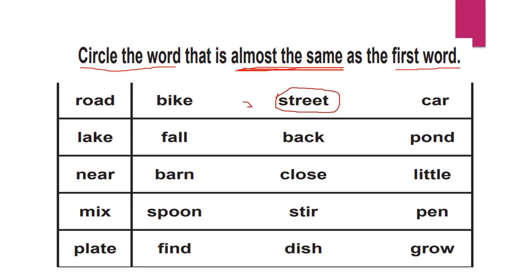Just erase this one. So the meaning of road is street. Next comes 'lake.' What is lake? Lake means — in our framing sentences we used the frog image, hopefully you remember that.